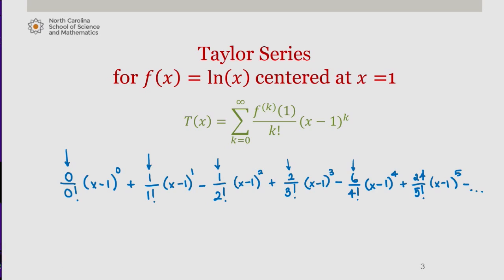Cleaning this up, we can write x minus 1 minus 1 over 2 times x minus 1 squared, plus 1 over 3 times x minus 1 cubed,